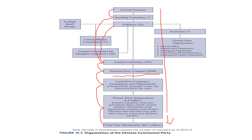All the functions of the National Party Congress are performed by the Central Committee in its absence. The Central Committee has 376 members, elected by the National Party Congress for a term of five years. They meet once every year for a week, which makes it more frequent — and therefore more powerful — than the National Party Congress.